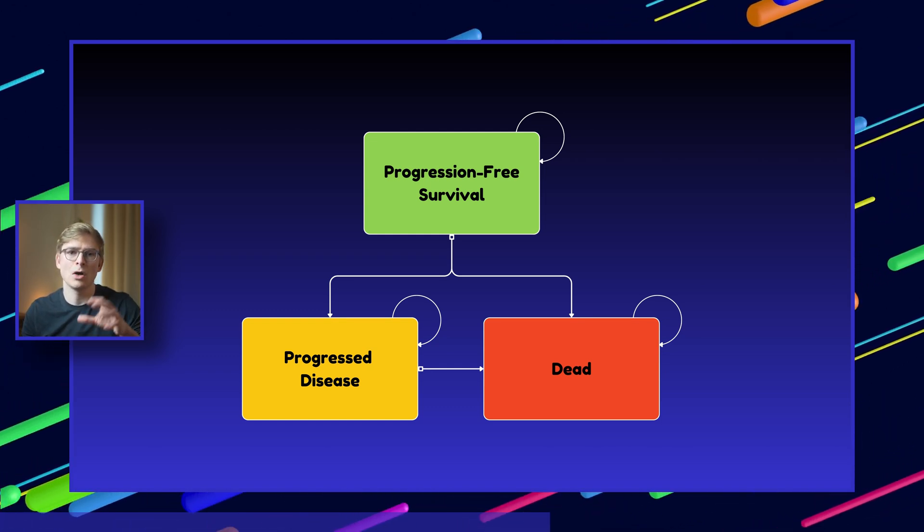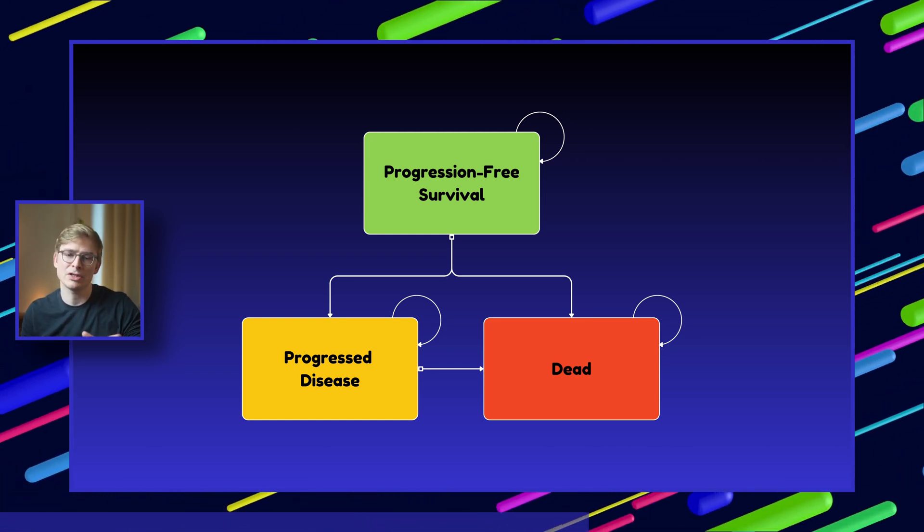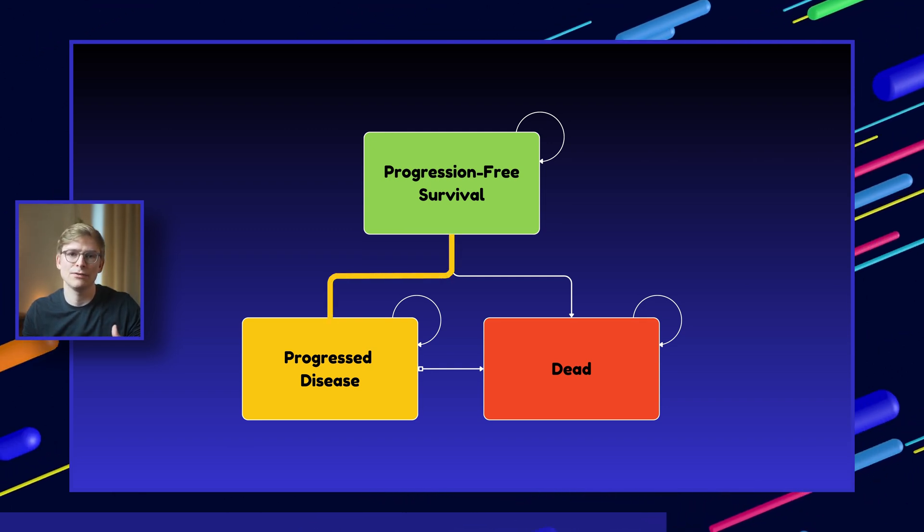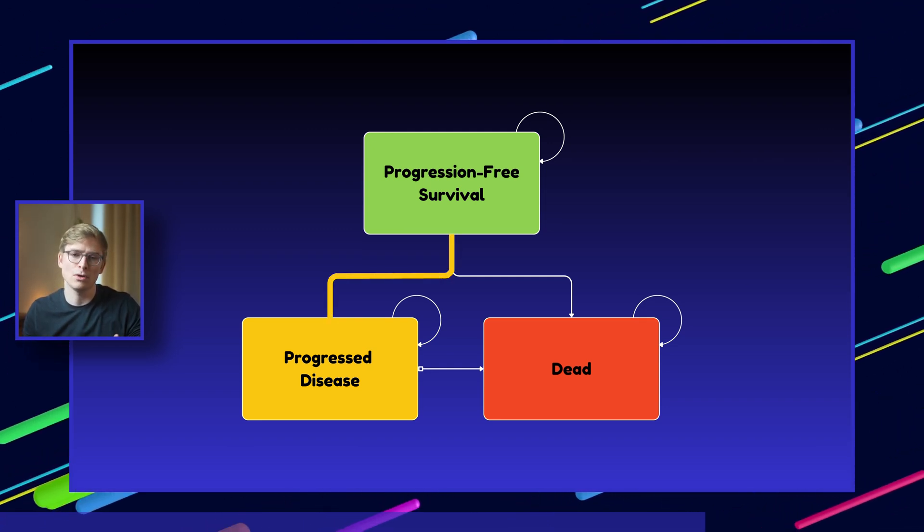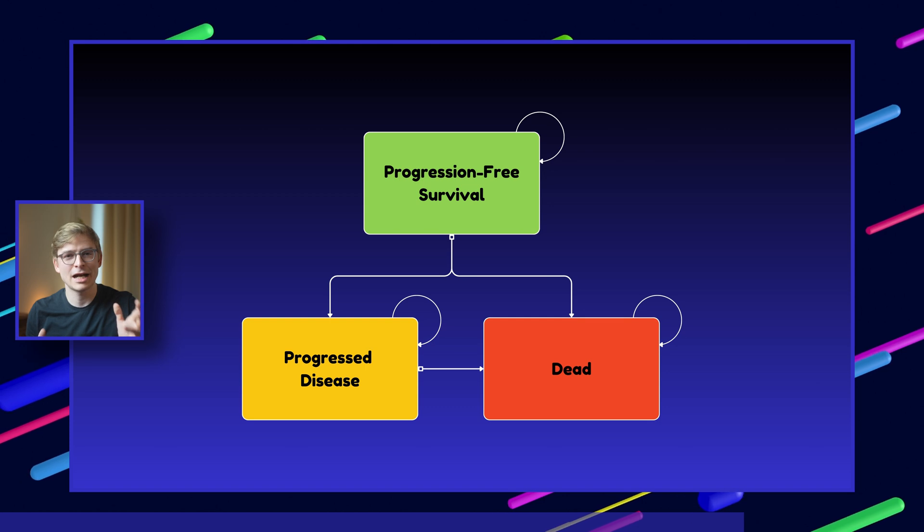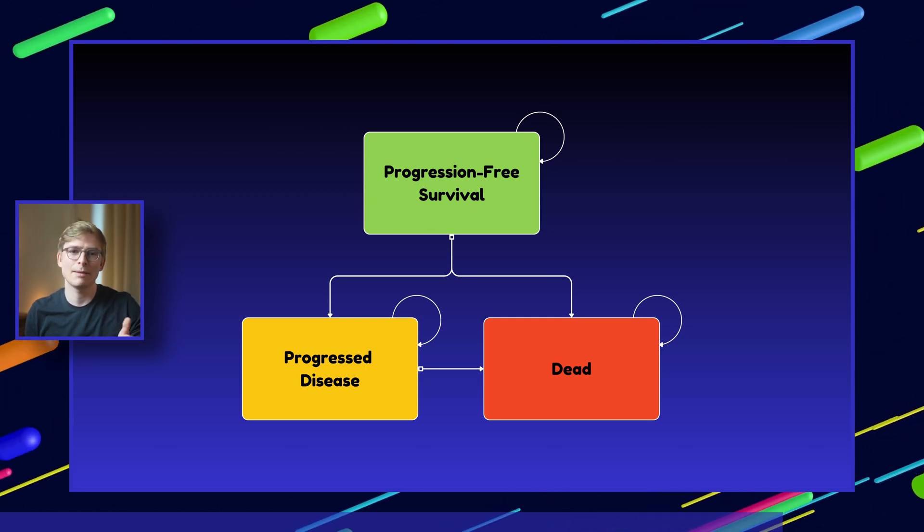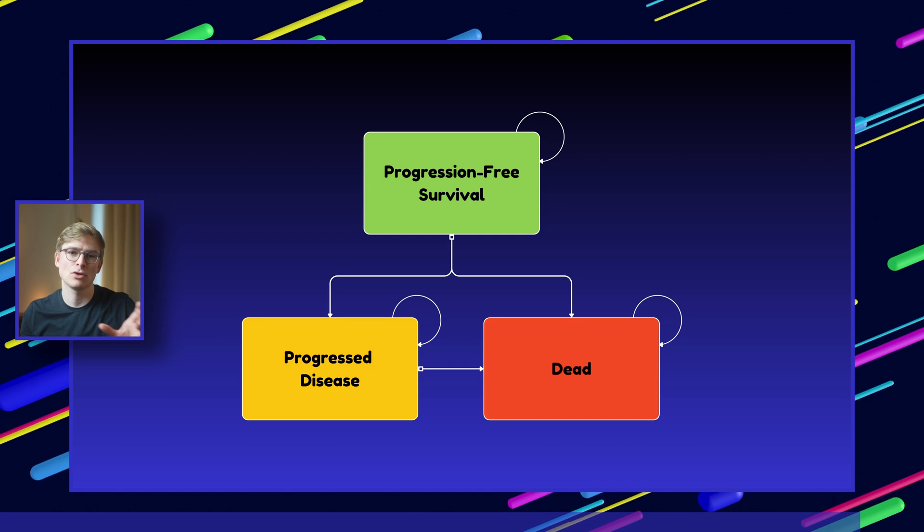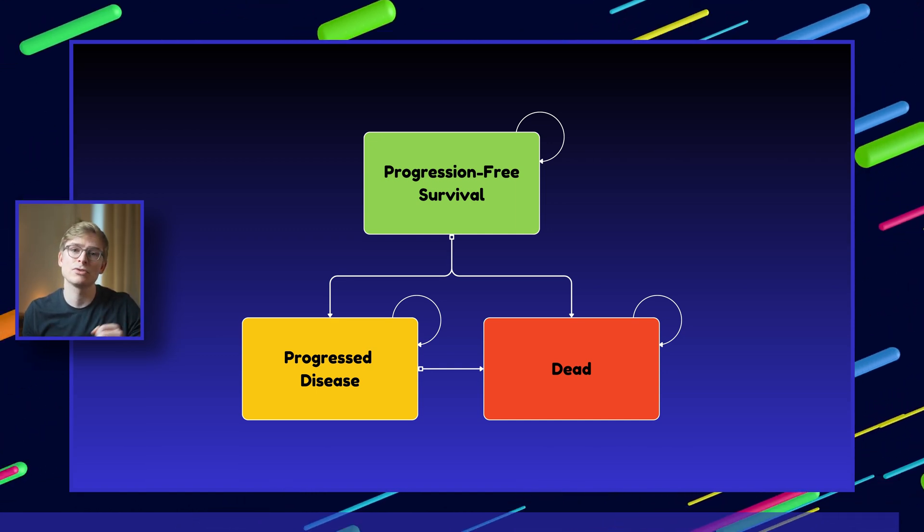If we assume that our cancer patient starts off in the progression-free health state, they will eventually transition to the progressed health state as their disease worsens over time. In a Markov model, time itself is considered as discrete time periods called cycles, and movements from one disease state to another are represented as transition probabilities.